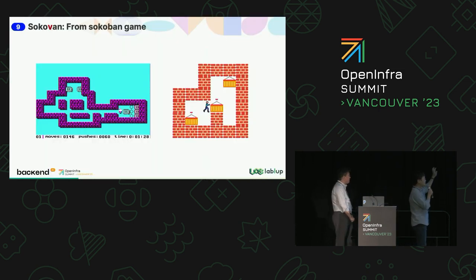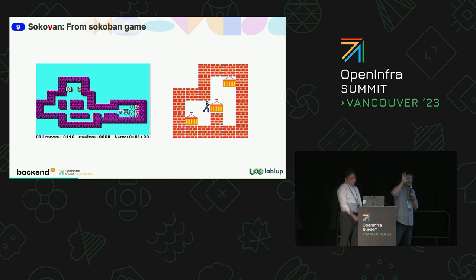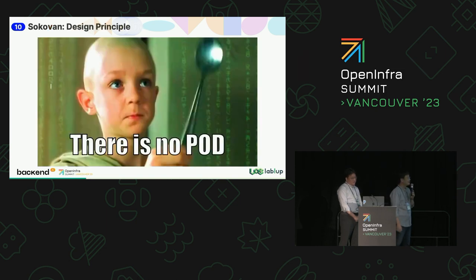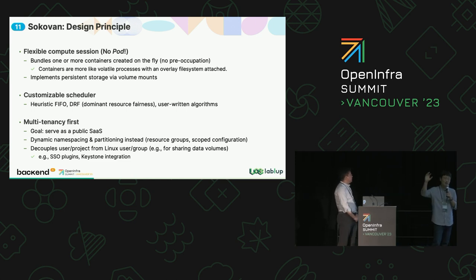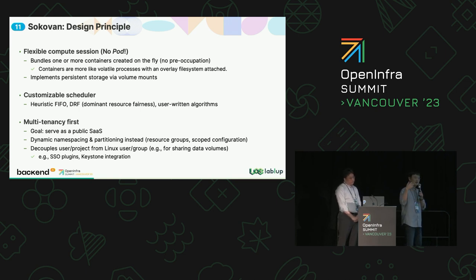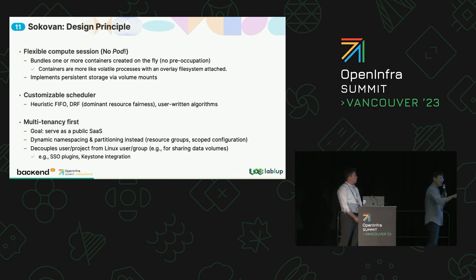We named this system Sokoban. Sokoban is a game to push containers into exact positions. The biggest difference between our Sokoban and Kubernetes is that there is no pod — we don't have any kind of pod architecture in our system. So it's very flexible: every node is just a container node, typically a VM or an OpenStack node. We can run any kind of container runtime on the system — Docker, containerd, or others like Magnum. We also apply a customized scheduler for specific computation workloads, so we can choose many different scheduling patterns.